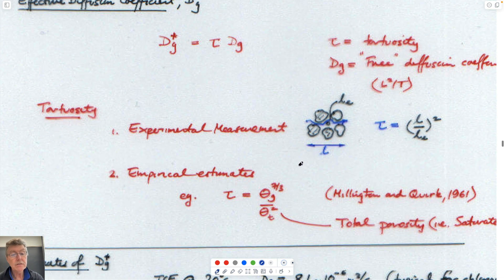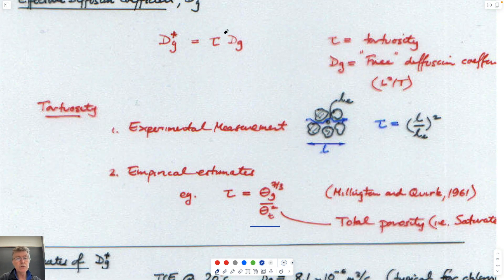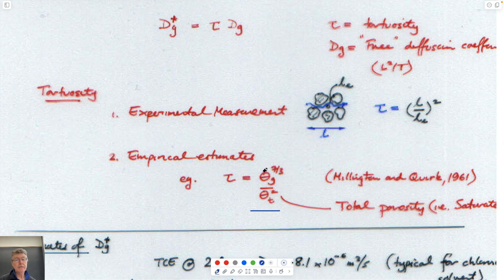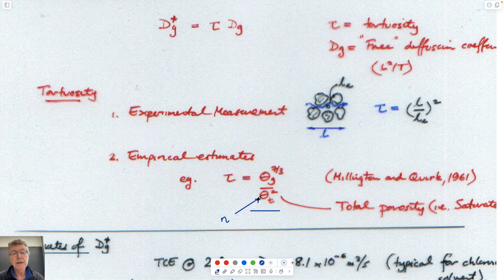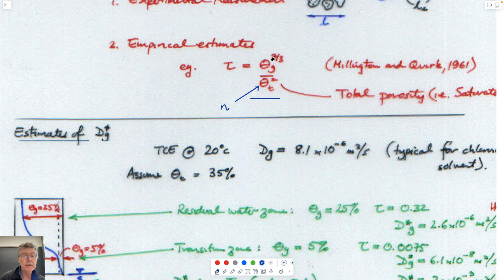We could use empirical correlations. The most commonly used is Millington and Quirk, which gives a value of tortuosity as a function of the volumetric gas content to the power of 7/3, divided by the total moisture content — essentially the porosity. The maximum value of this would be porosity, when all pores are filled with gas rather than water. The gas-filled porosity isn't necessarily the same as the total porosity because pores can be filled with water.